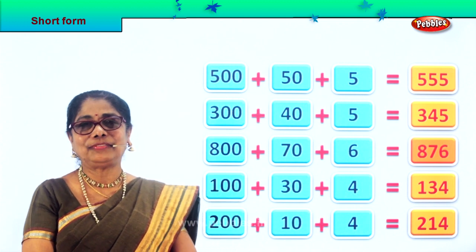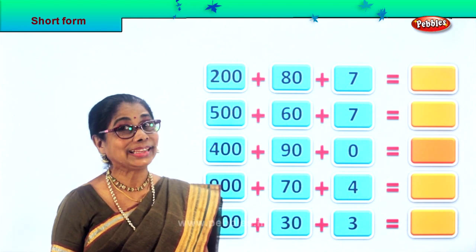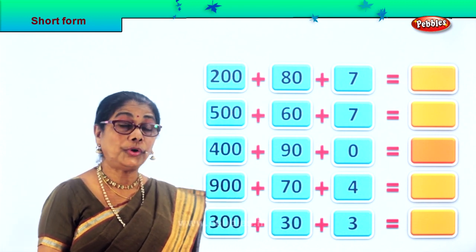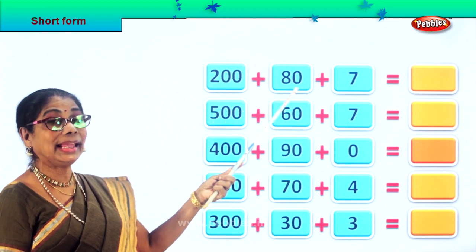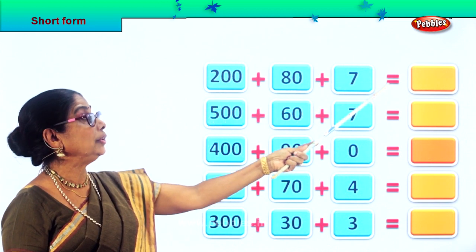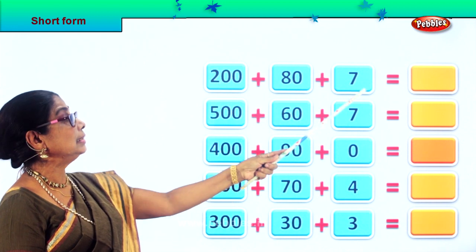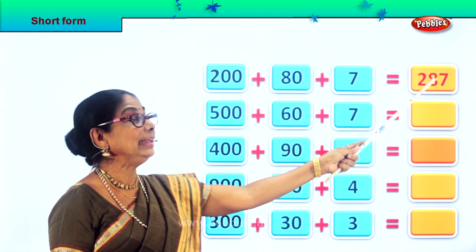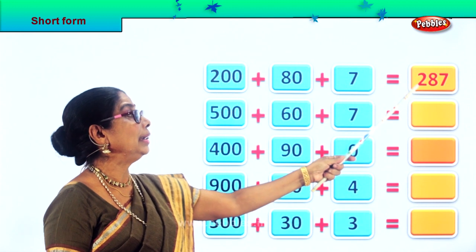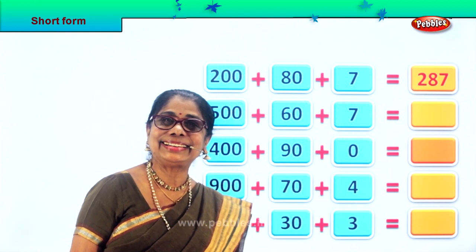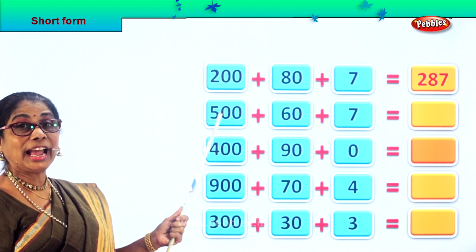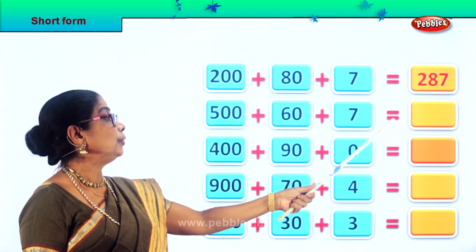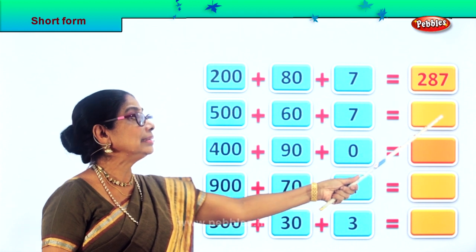Did you enjoy? Let's take another set of numbers and do the short form. What is the short form for 200 plus 80 plus 7? 200 plus 80 plus 7 equal to 287. What is the short form for 500 plus 60 plus 7? 500 plus 60 plus 7 equal to 567.